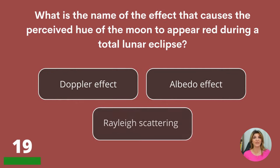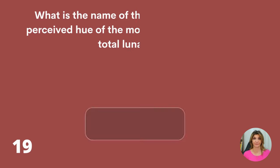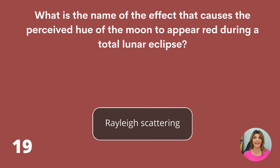What is the name of the effect that causes the perceived hue of the Moon to appear red during a total lunar eclipse? The Doppler effect, albedo effect, or Rayleigh scattering? Rayleigh scattering.